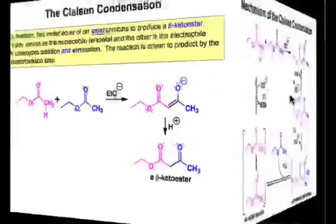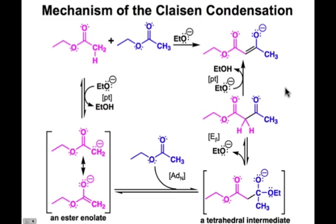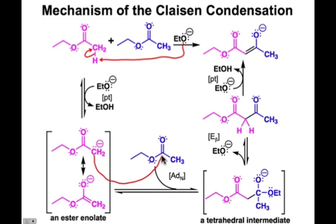Let's take a detailed look at the mechanism of the Claisen condensation. This begins with a proton transfer step: we remove the proton on the α carbon of one of the ester groups to make the ester enolate, a resonance-stabilized carbanion whose structure is shown here. This is the nucleophilic partner of the Claisen condensation, and it's going to do nucleophilic acyl substitution on the second ester equivalent. First, we do an ADn step — nucleophile addition to the polarized π bond. The electrophilic partner is colored blue and the nucleophilic partner pink, so you can clearly see the new carbon-carbon bond formed in this ADn step.